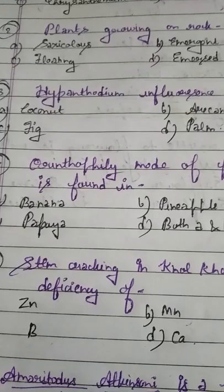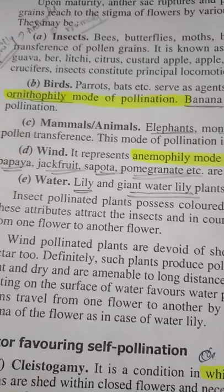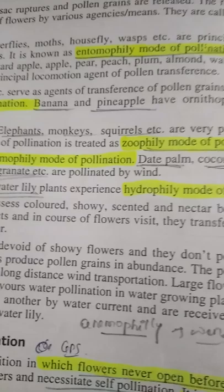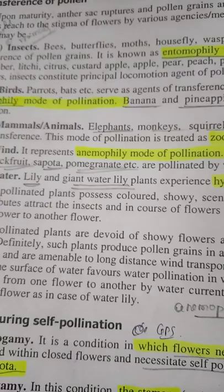Remember these terms: Entomophily is pollination by insect. Some entomophilous fruits: Guava, Ber, Lychee, Citrus, Custard Apple, Apple, Peach, Pear, Plum, Almond, Walnut, Cucurbit, and crucifers. These are all insect pollinated plants or entomophilous plants.